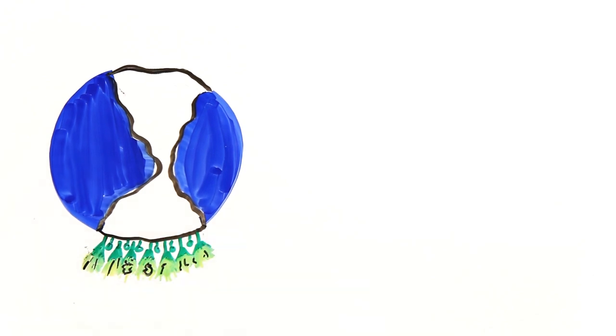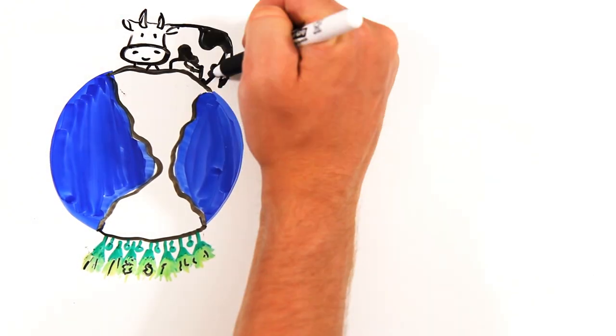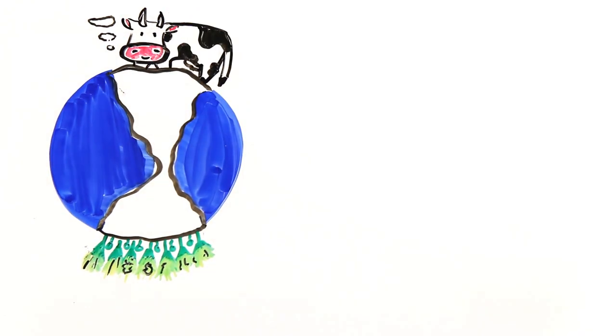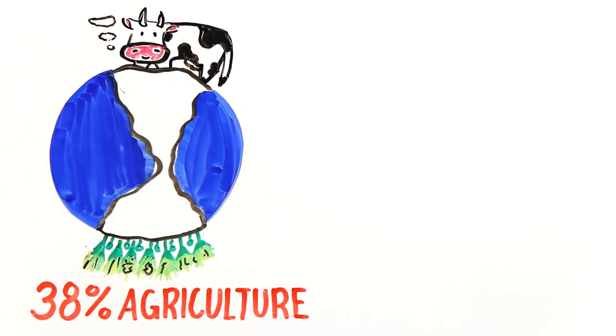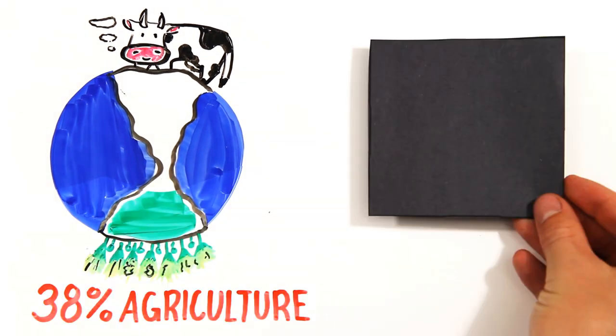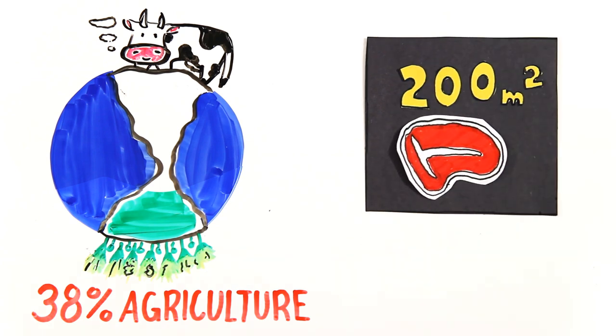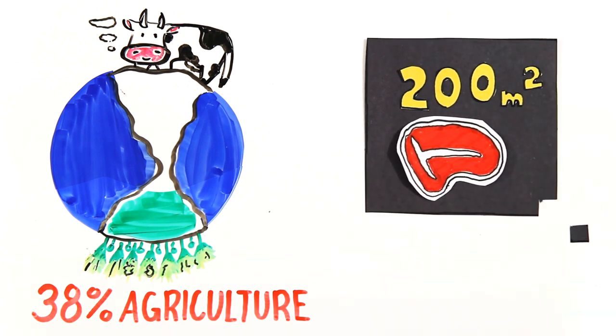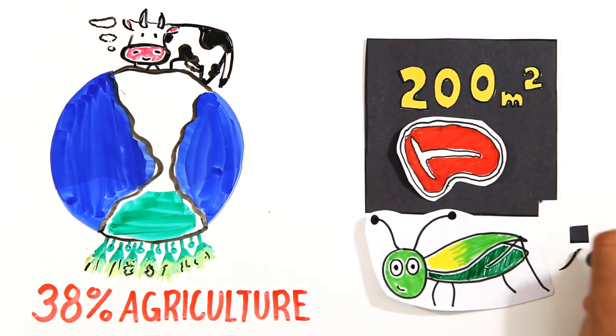Currently, there are 1.53 billion hectares of cropland and 3.38 billion hectares of pastures covering our earth. Essentially, 38% of the land you see on a map is used for agriculture and farming. But where it takes 200 square meters of land to grow one pound of beef, it only takes 15 square meters to grow one pound of crickets.